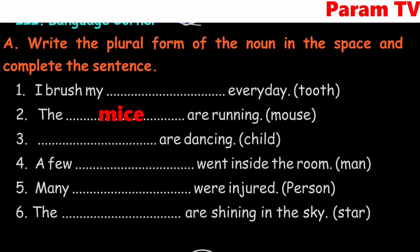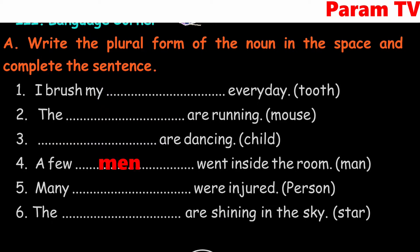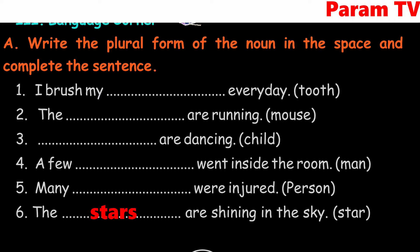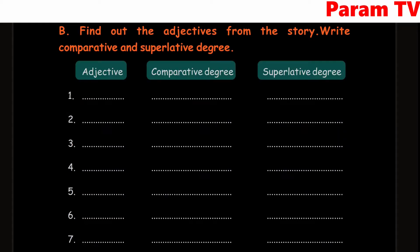Mice are running — mouse, the plural is mice, M-I-C-E. Next: children are dancing. A few men went inside the room. Many persons were injured. The stars are shining in the sky.